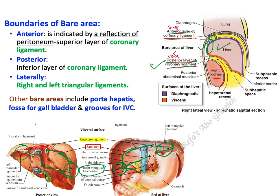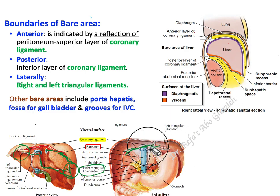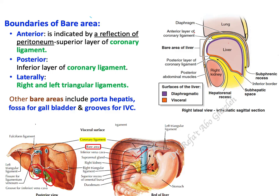Now, what about other structures not covered by peritoneum? There is the gallbladder — the fossa for the gallbladder is not covered by peritoneum because of the existence of the gallbladder. Also, the inferior vena cava is not covered by peritoneum. And also the porta hepatis — the hilum of the liver — is not covered by peritoneum. So we have three parts: the fossa for the gallbladder, the porta hepatis or hilum of the liver, and the inferior vena cava.